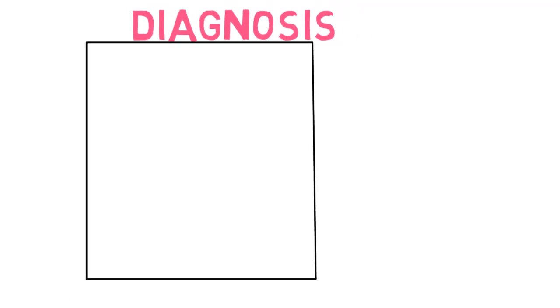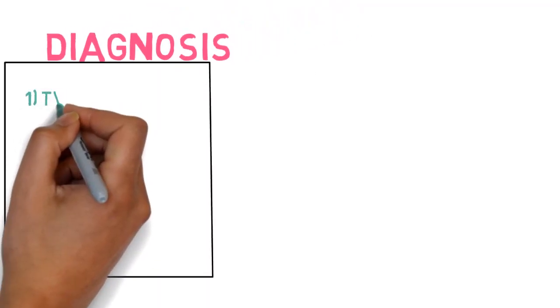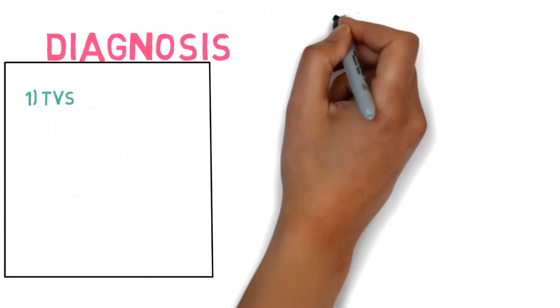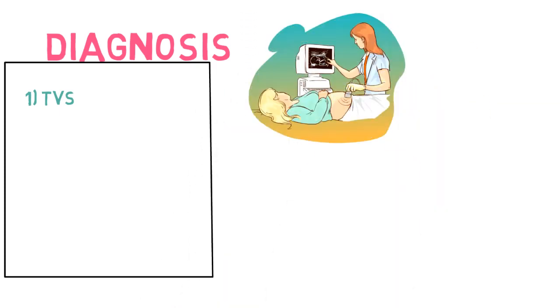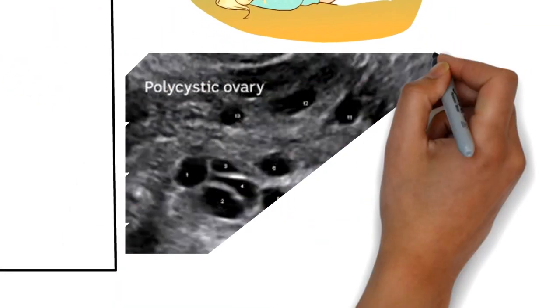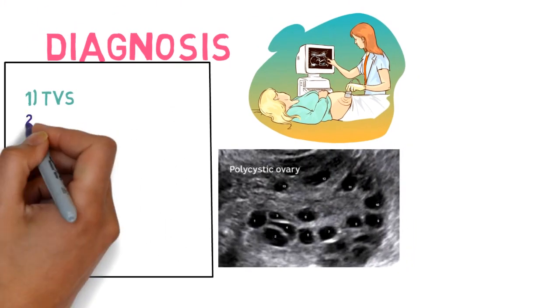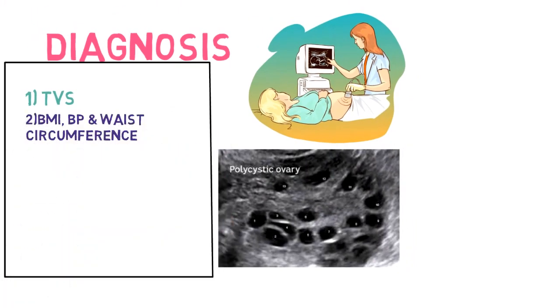For diagnosis, you can do a transvaginal sonography which may result in increased number of peripheral follicles and bilaterally enlarged polycystic ovaries with a large number of follicles of more than 2 to 9 mm in diameter per ovary, more than 20 follicles each.